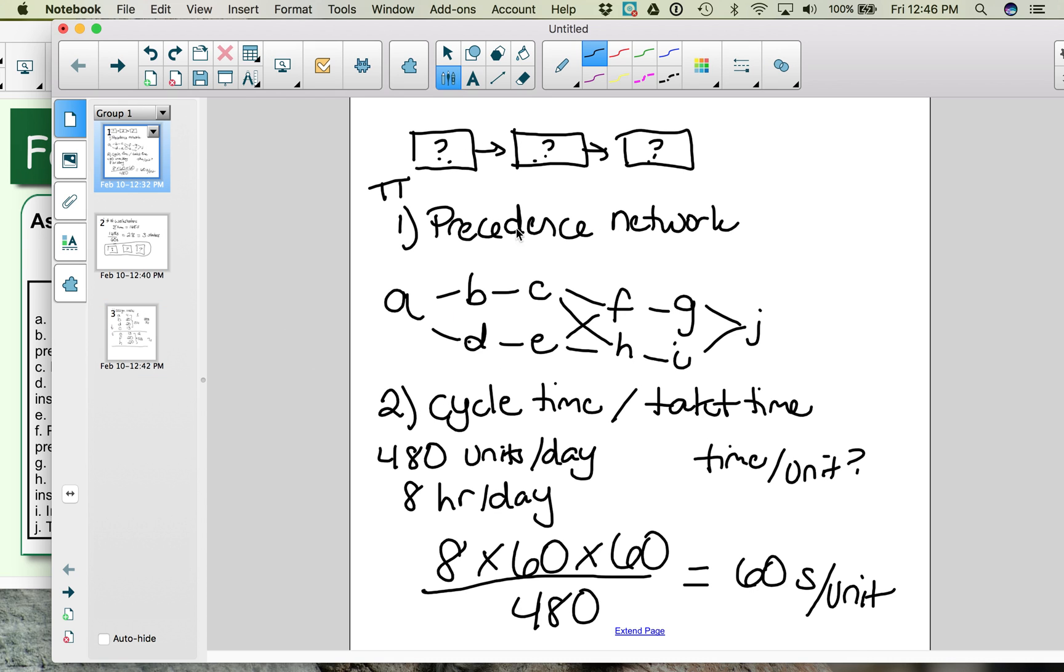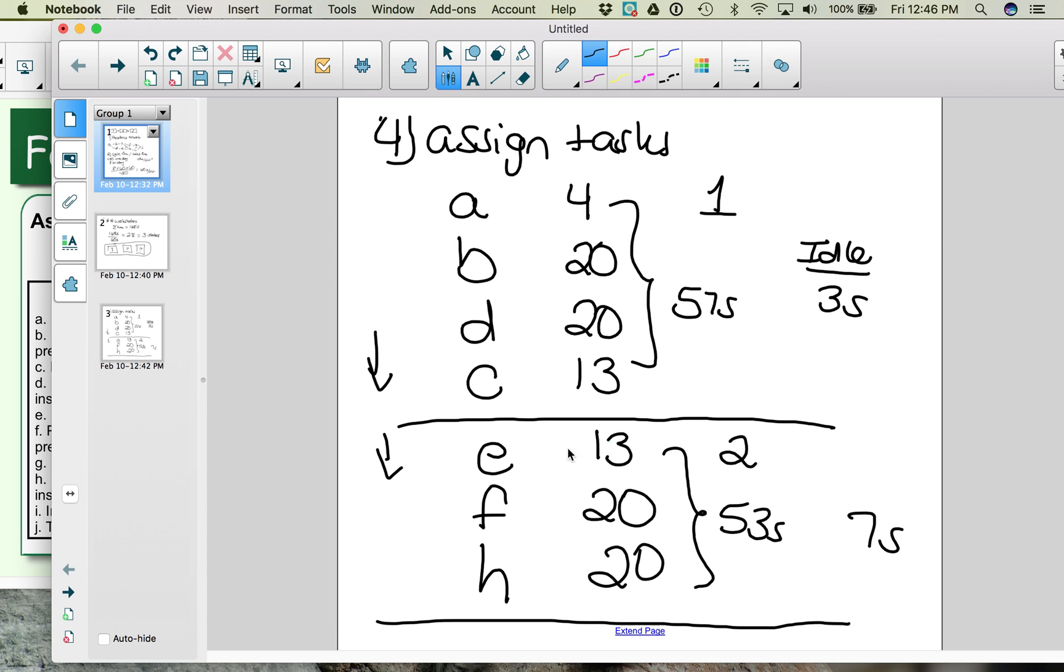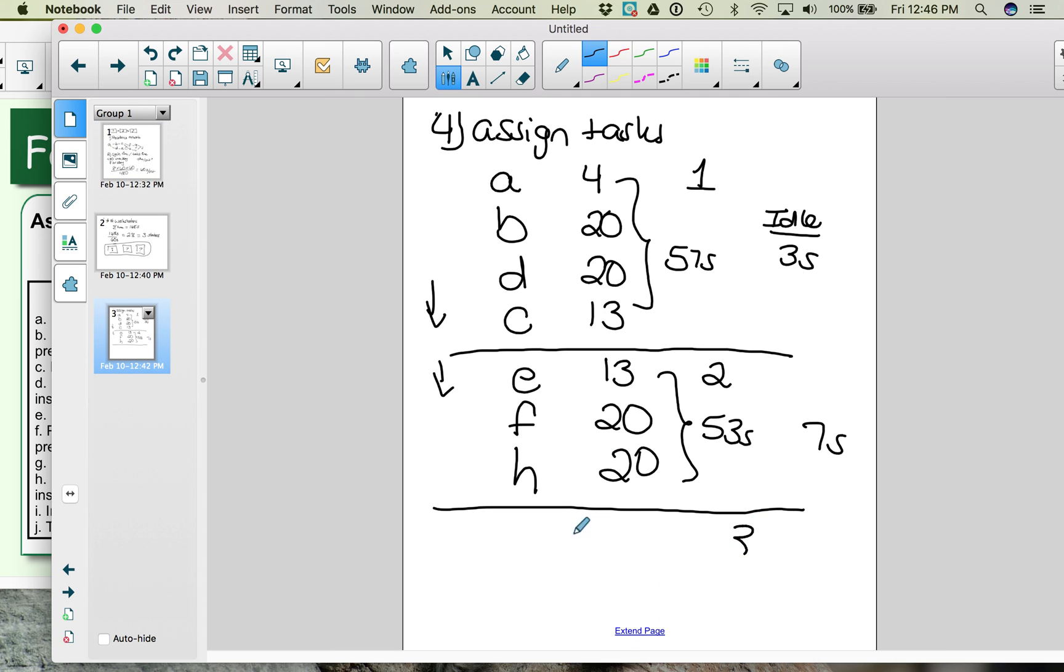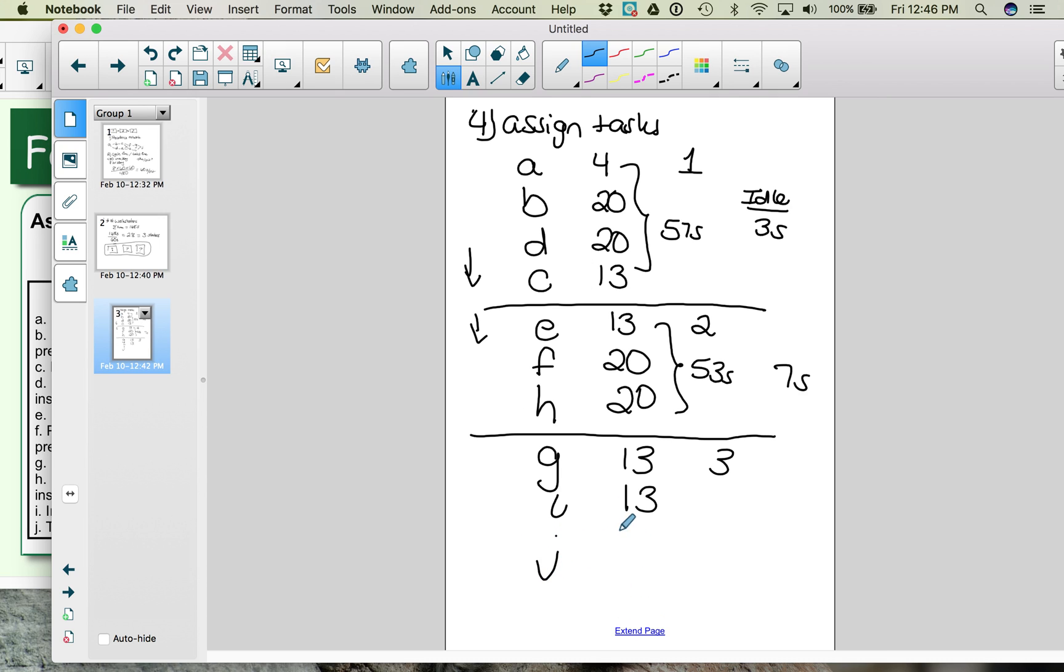And it means that the next activity, which was G and I, need to happen at the third workstation. So here's G, here's I. G was 13 seconds, I was 13 seconds. That takes up 26 seconds. And the last activity, J, took 32 seconds. Let's make sure that all fits into 60 seconds at a workstation. 32 plus 13, so that's 45, plus we have 58 here, which leaves 2 seconds of idle time. So we have assigned tasks to our three workstations.